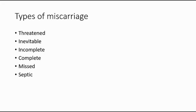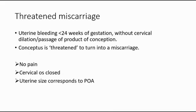There are 6 types of miscarriage, which are threatened, inevitable, incomplete, complete, missed, and septic miscarriage. I'm going to talk about them one by one in this video.